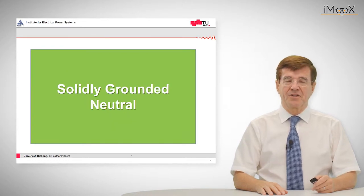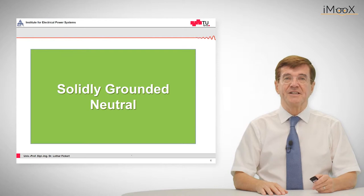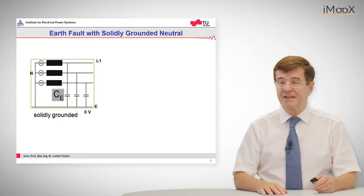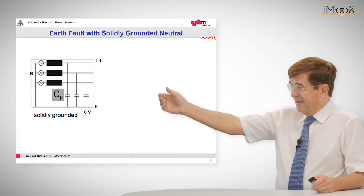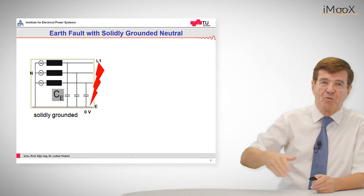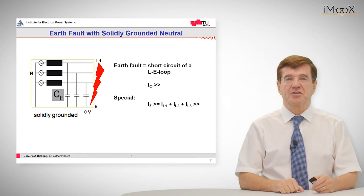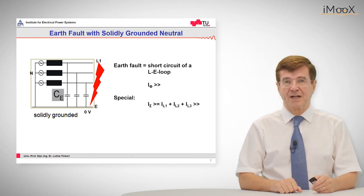So let's start with the solidly grounded neutral system, which is the easiest one concerning earth faults. In such a system, as we can see here to my right side, if there is an earth fault, so a phase L1 to ground fault, there is more or less something like a short circuit in the phase to ground loop.